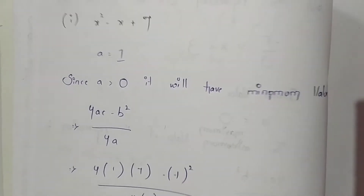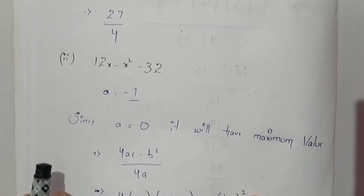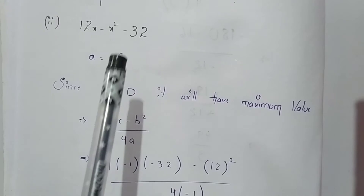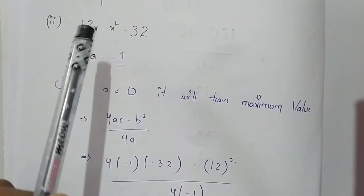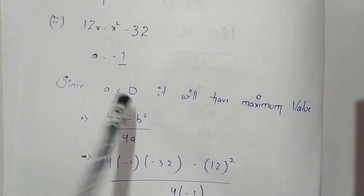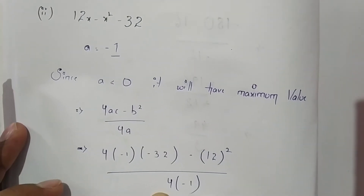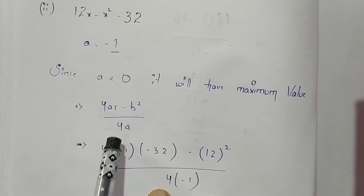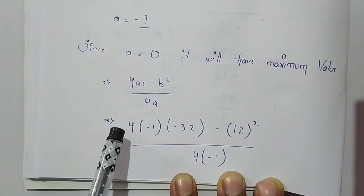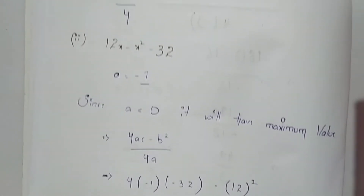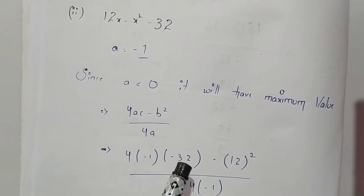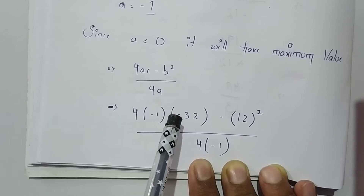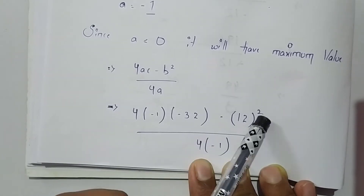Now the second expression is 12x - x² - 32. The coefficient of x² is -1, which is negative. Therefore this expression will have a maximum value. The formula is the same: (4ac - b²) / 4a. From this expression, a is -1, c is -32, and b is 12. So we get 4 × (-1) × (-32) - 12² divided by 4 × (-1).